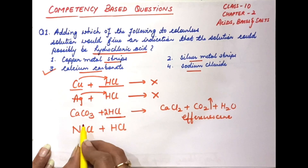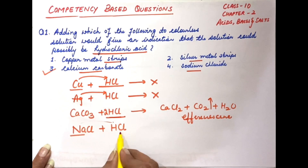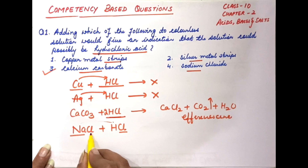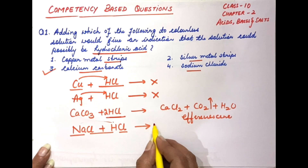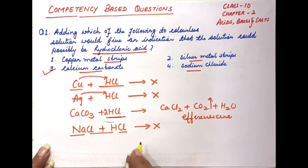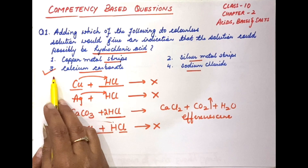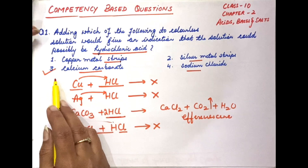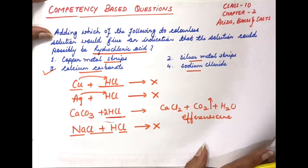Fourth option भी देख लेते हैं — sodium chloride की reaction HCl के साथ नहीं होगी, because even if displacement occurs, the substances would remain NaCl and hydrochloric acid. There is no reaction between sodium chloride and hydrochloric acid. So the correct option is calcium carbonate.